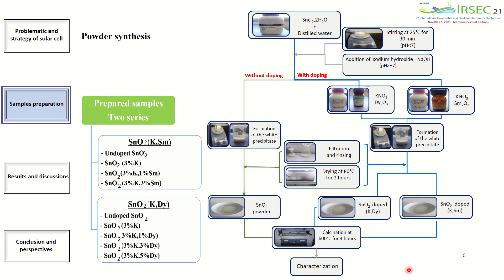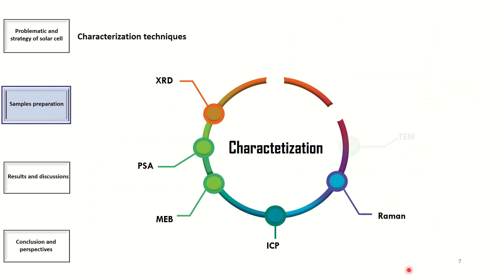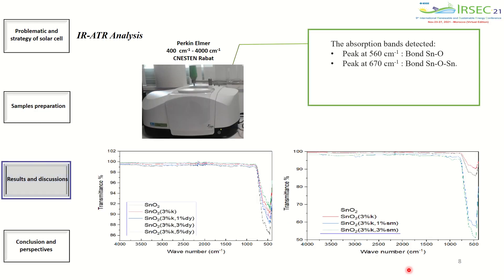The diagram in the following figure illustrates the main preparation steps. The chosen method is co-precipitation. To determine the structure of the different phases formed during the thermal treatment, the use of the following characterization techniques remains the most frequent solution.